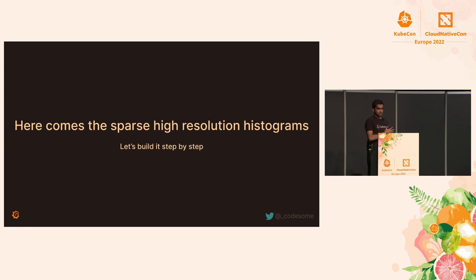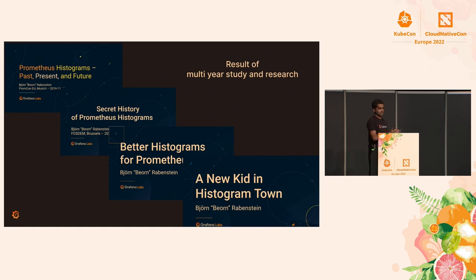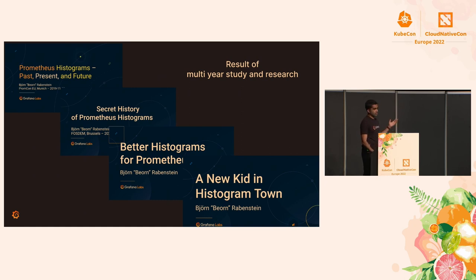Here comes the new histograms we are working on right now. It's in POC stage — we have a large design and are building it step by step. What I'll explain in the next five to ten minutes represents a multi-year study and research by Bjorn, who is here with us. Bjorn, myself, and Dieter, my colleague from Grafana Labs, have worked on the code and POC. We're calling it proof of concept because a few things still need to be standardized, but most of it is ready and open source.